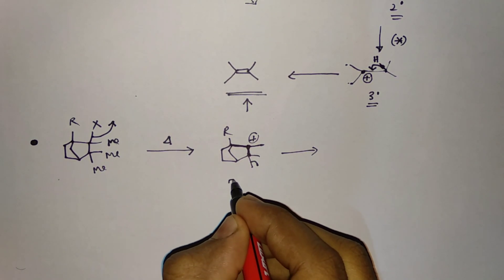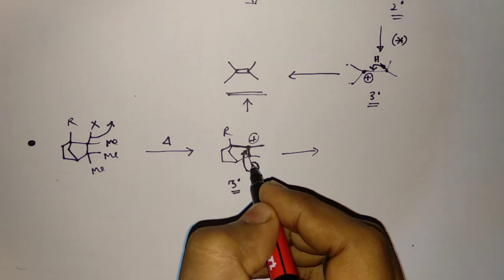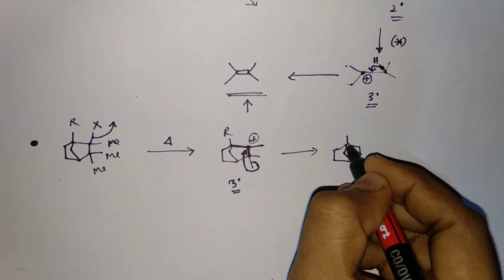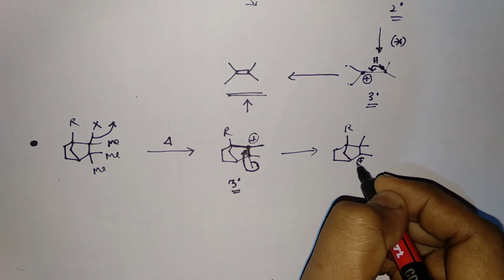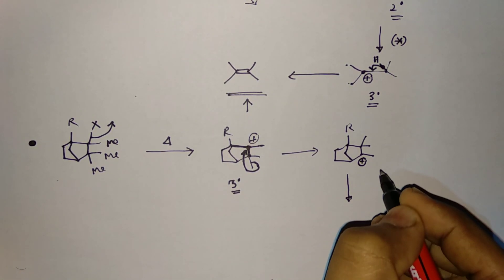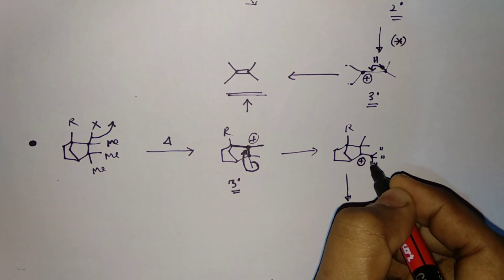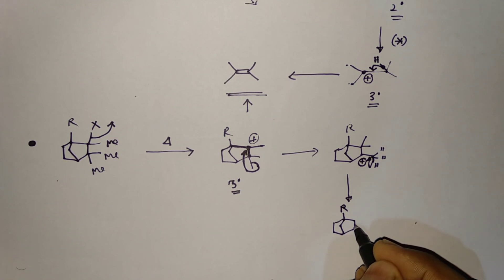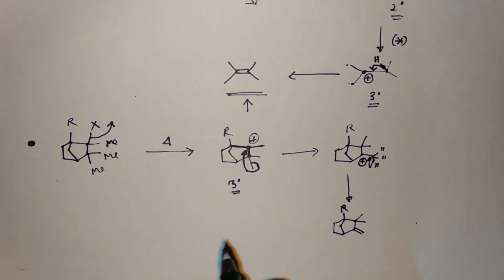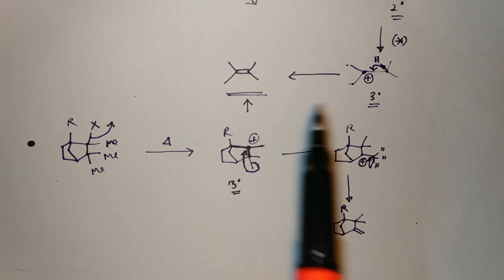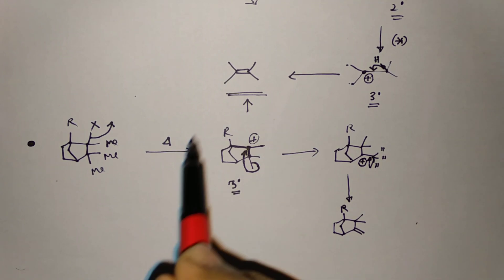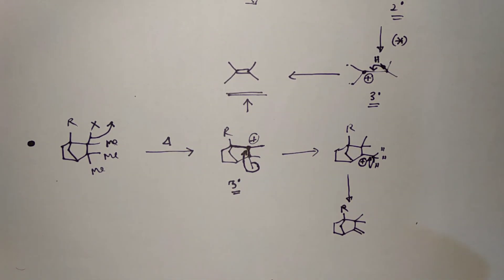After the halogen leaves, we get a 3° carbocation with methyl groups and the R group. In Wagner-Meerwein rearrangement, migration then occurs. The two methyl groups move and a positive charge forms at the new center. Finally, a hydrogen deprotonates from the methyl group and we get the final product.